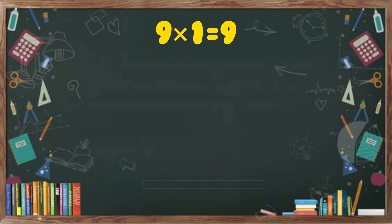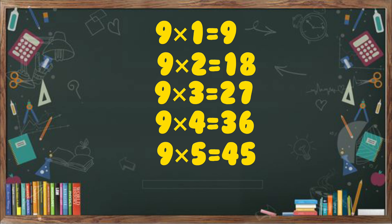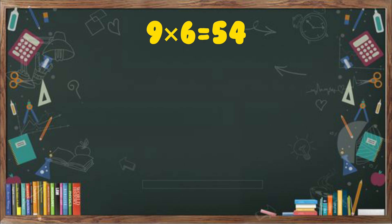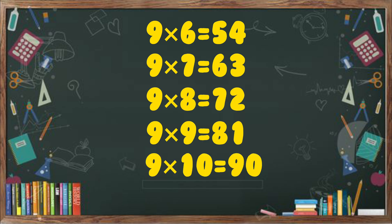9 ones are 9. 9 twos are 18. 9 threes are 27. 9 fours are 36. 9 fives are 45. 9 sixes are 54. 9 sevens are 63. 9 eights are 72. 9 nines are 81. 9 tens are 90.